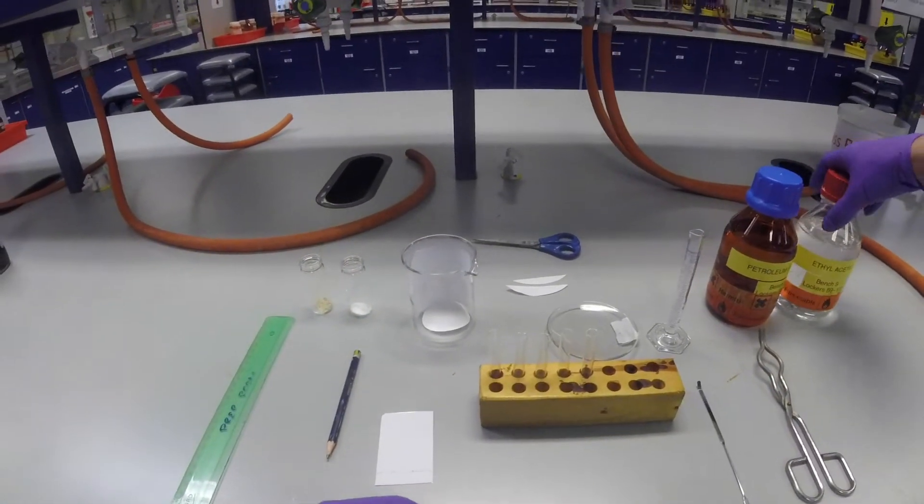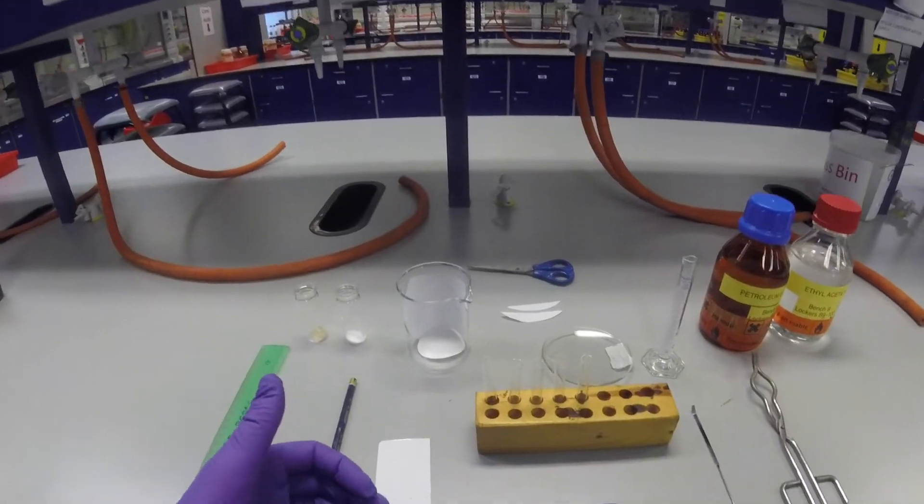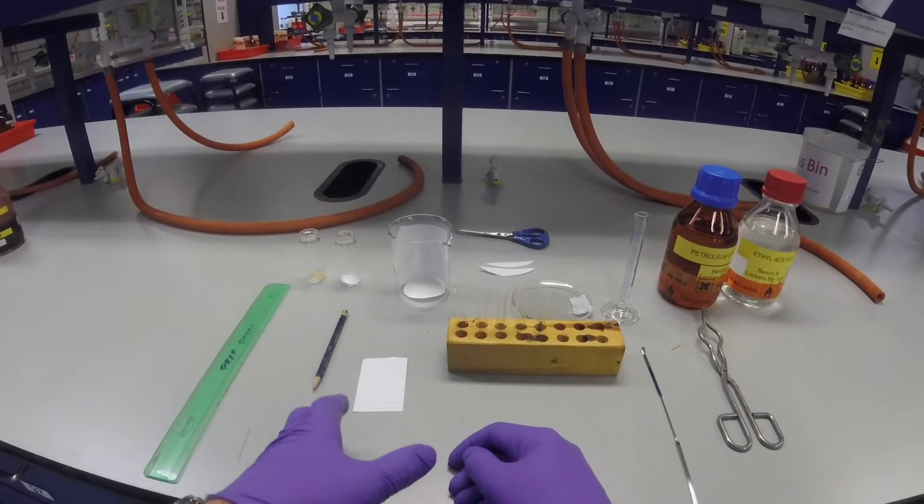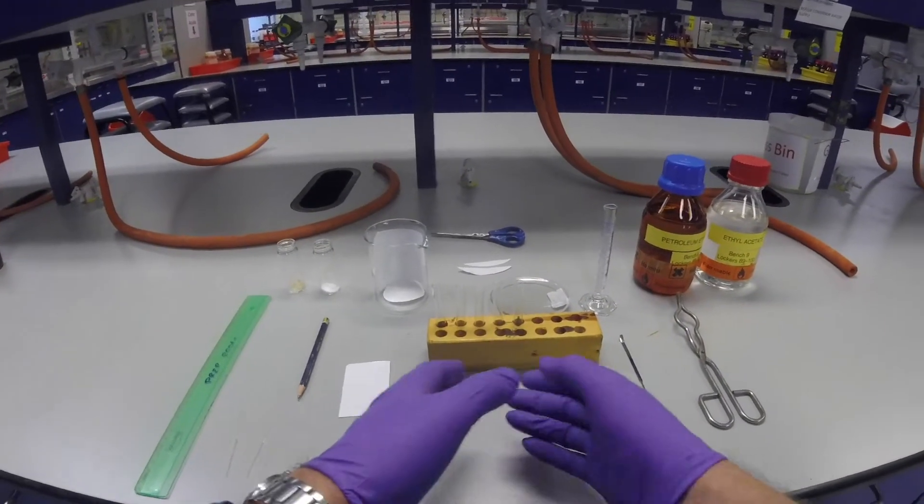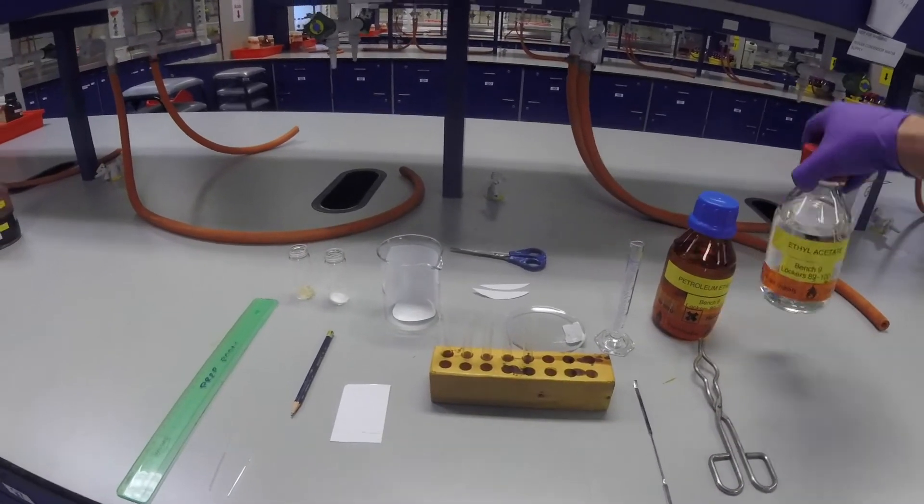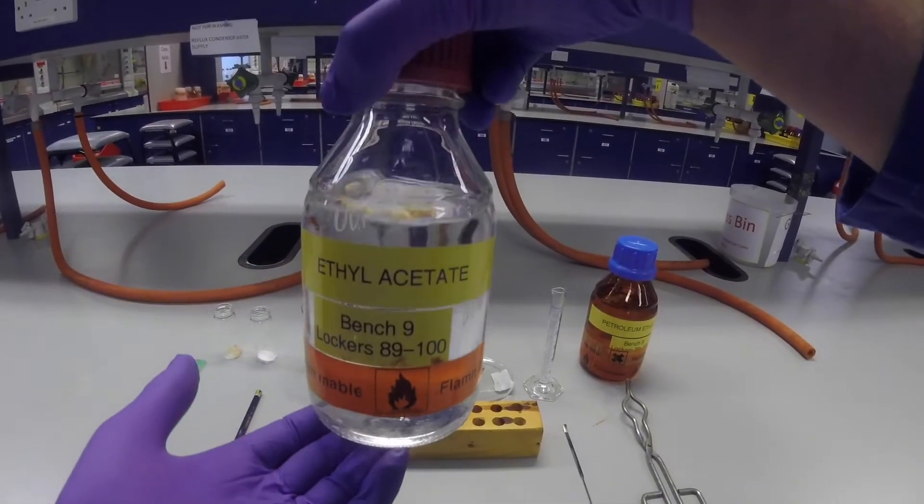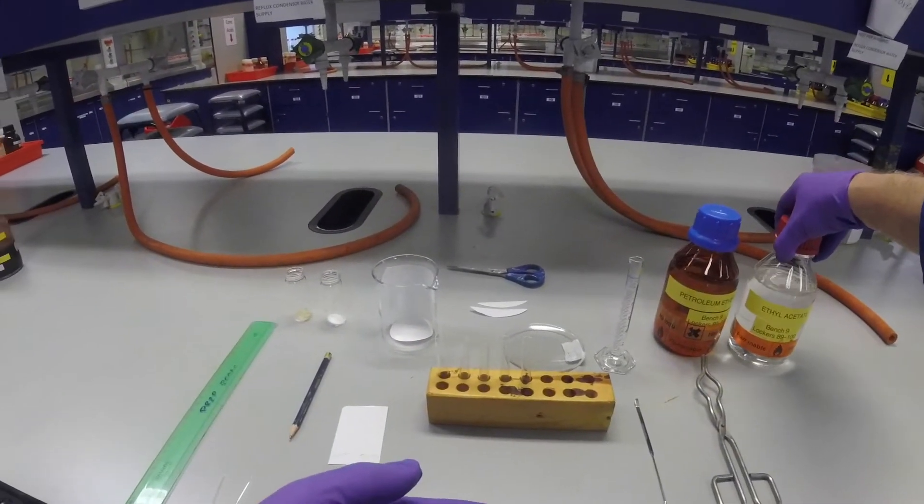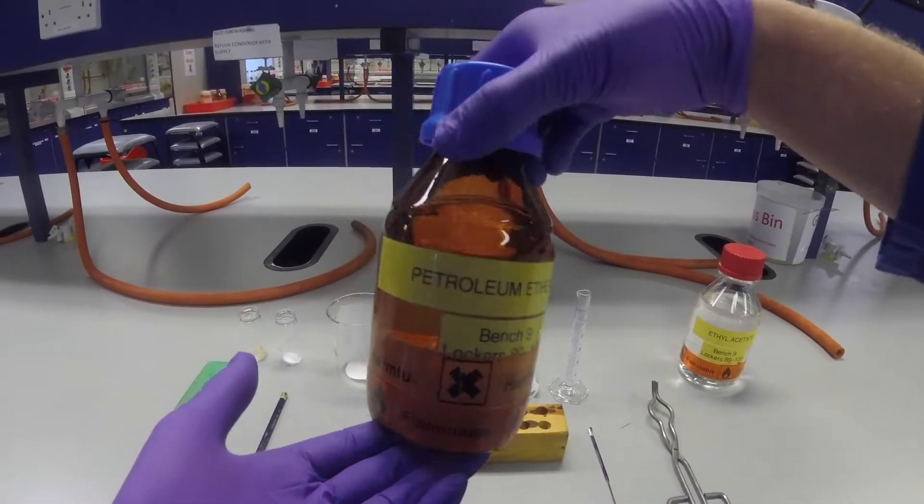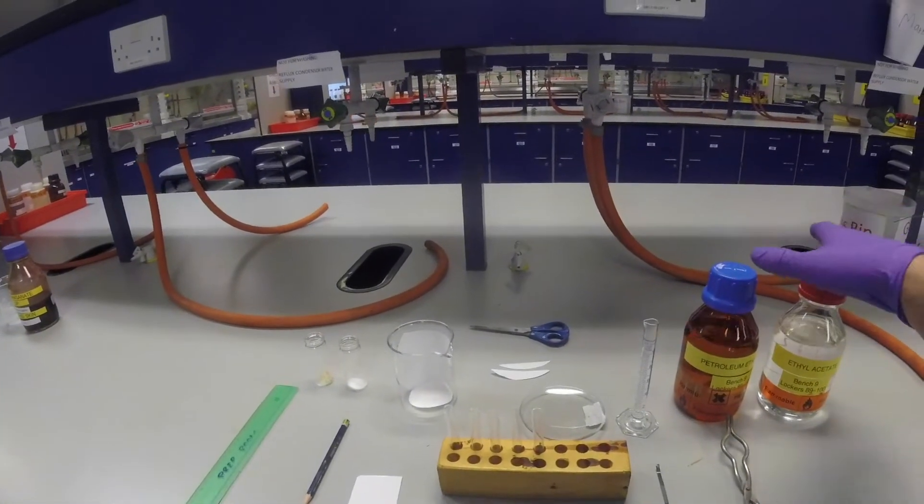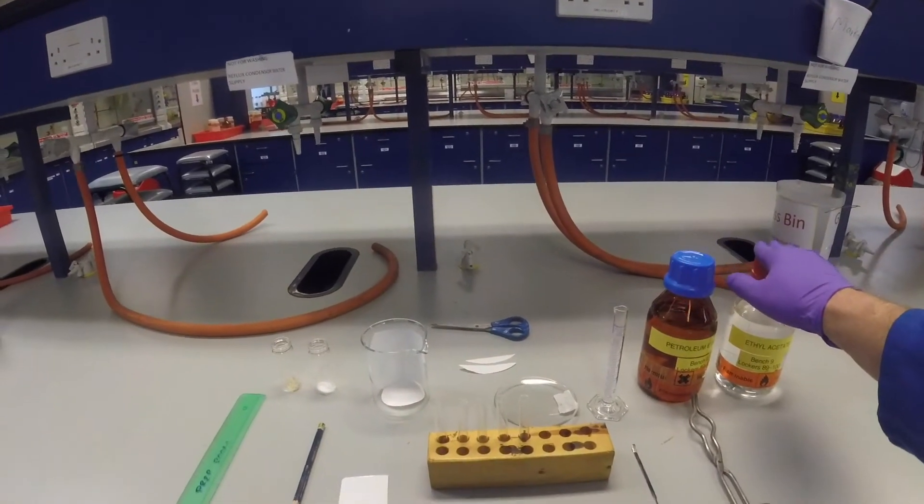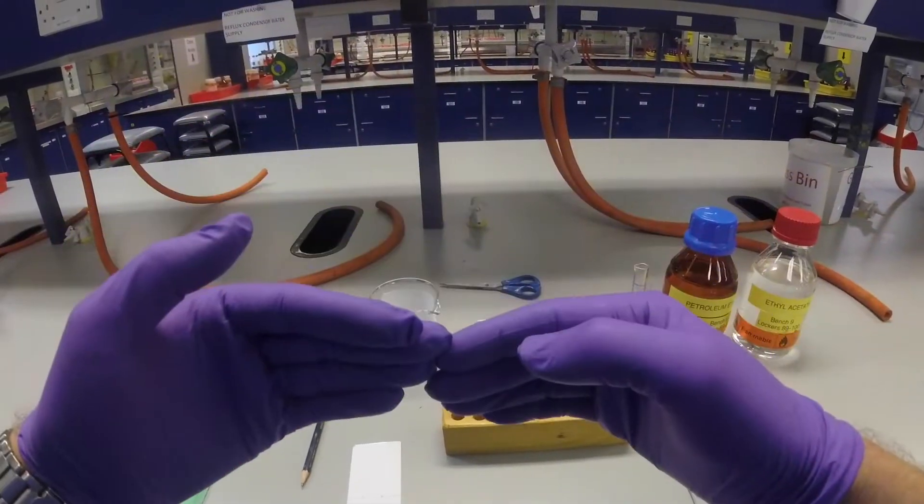Then we have our TLC eluent, the solvent system that we're going to use. This mixture can change depending on the TLC you're running, the reaction conditions, and what kind of compounds you're looking at. Generally it's a mixture between two different solvents, one which is the more polar component—in this case ethyl acetate—and for our non-polar component we're going to use petroleum ether. You can change the ratio of petroleum ether to ethyl acetate, of non-polar to polar, and it will change the rate at which things move up or down the plate.